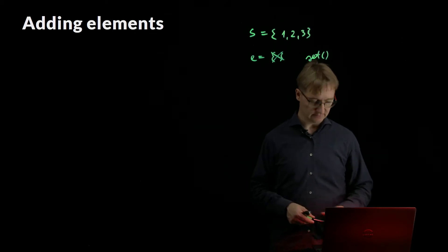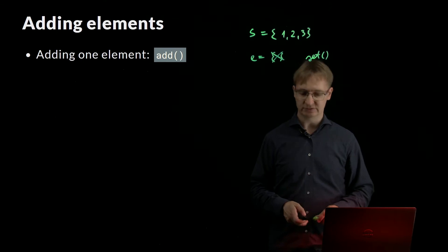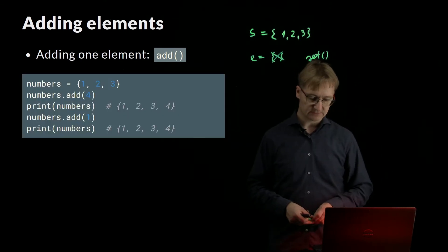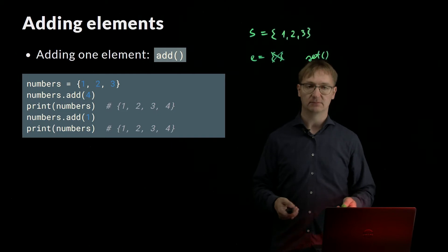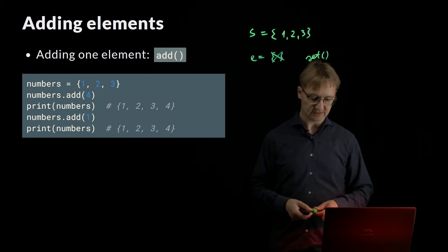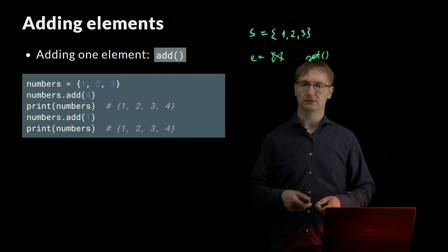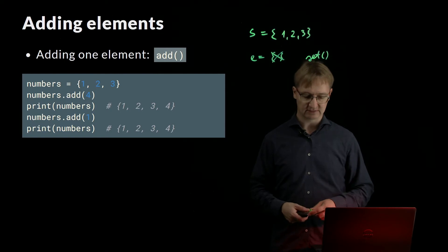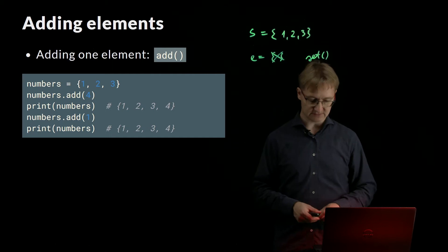How to add elements into a SET? We can add one element using the method ADD. Here is an example: we have a set of three elements and I add a fourth one. If I print it out, I can see element 4 is added. If I try to add an existing element — a value already inside the SET — it is not added. So if I try to add 1 again, nothing changes.